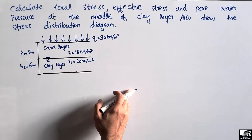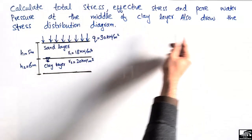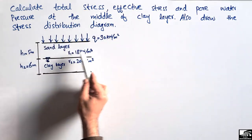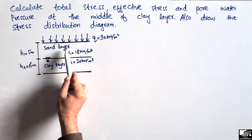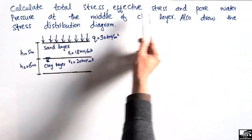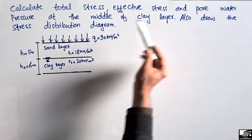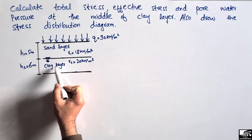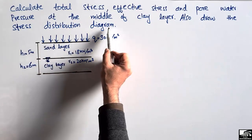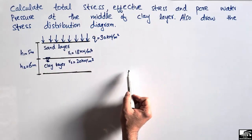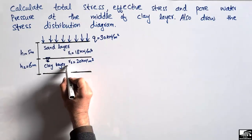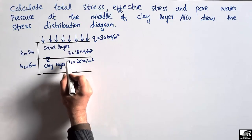The problem states: calculate the total stress, effective stress, and pore water pressure at the middle of the clay layer. We are given two layers of soil — the first one is the sand layer, the second one is the clay layer. We have to find the stresses at the midpoint of the clay layer, and also draw the stress distribution diagram.